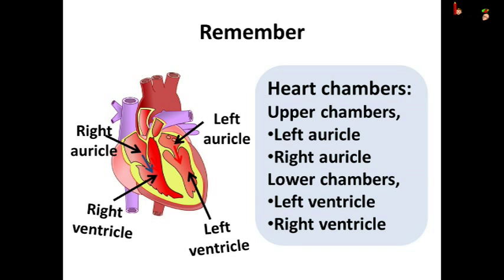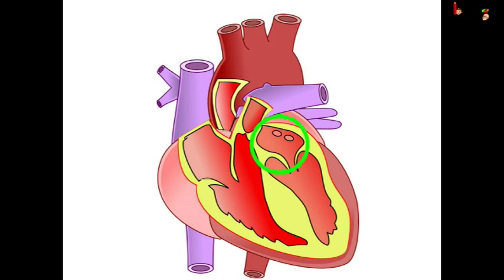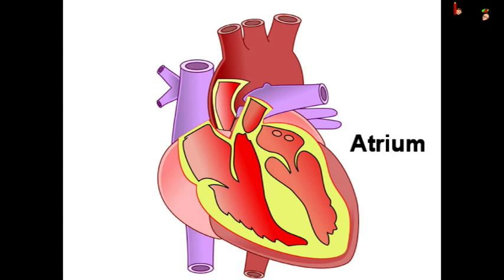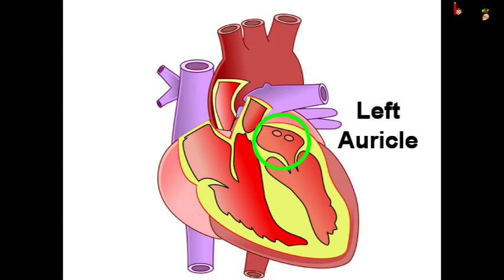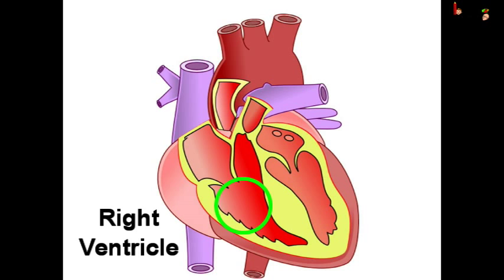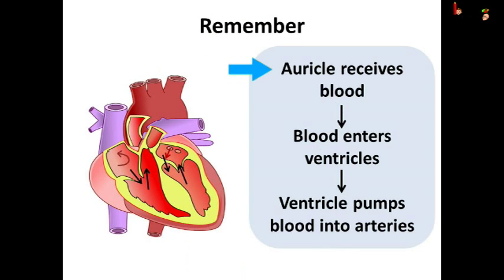Remember children, the heart has four chambers. The upper chambers are called auricles, or atria — there is a left auricle and a right auricle. The lower chambers are called the left ventricle and the right ventricle. The auricles receive blood through the veins, then blood enters the ventricles through the valves. The ventricles pump blood into arteries, which take it to different parts of the body.